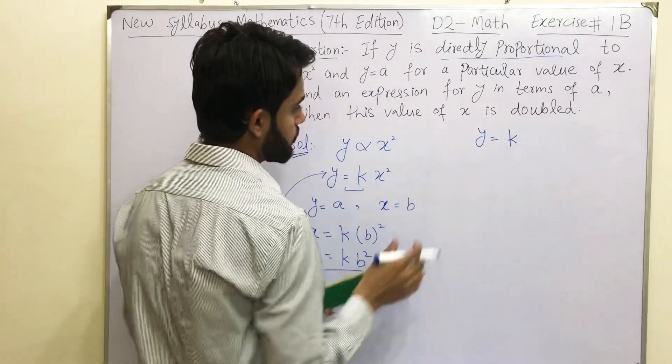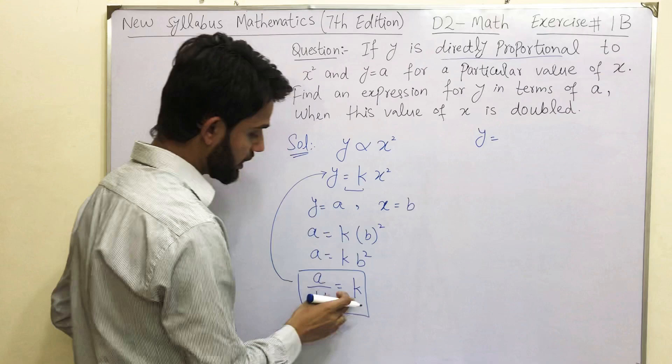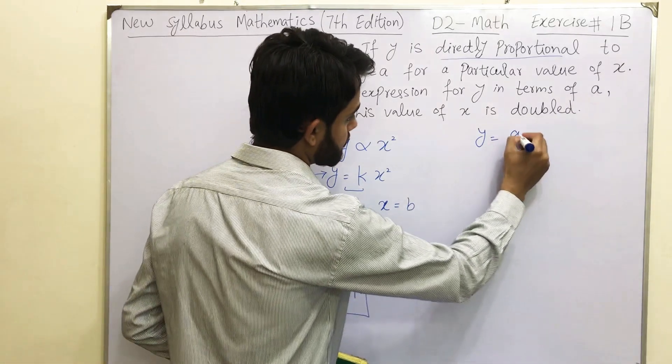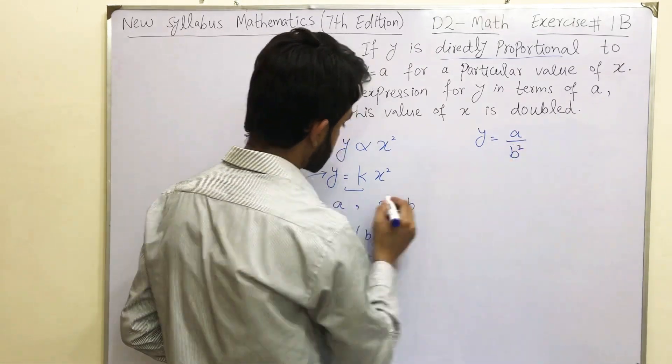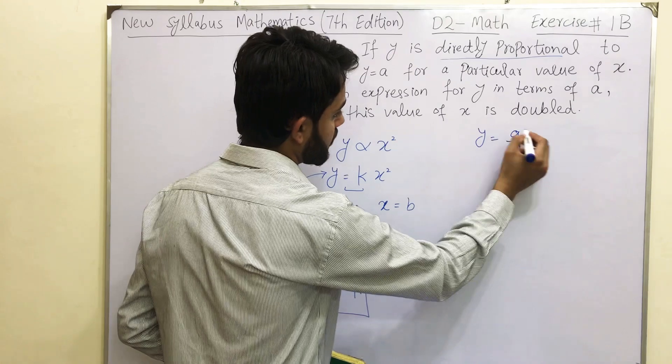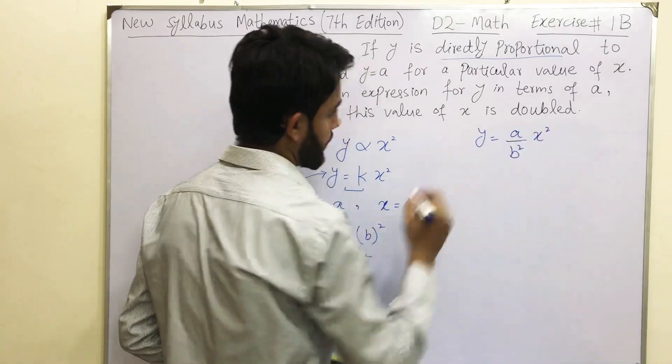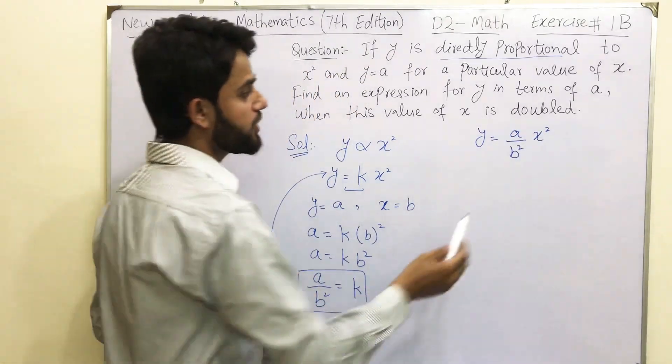Y is equal to, we need to plug in the value. Value of k is a over b square, and we have x square. Okay, so far we reached to this point.